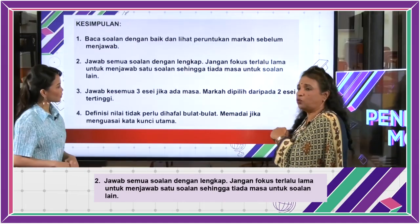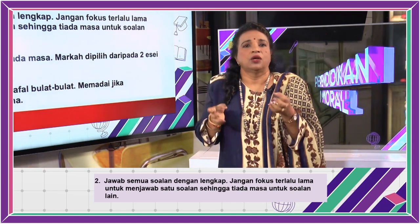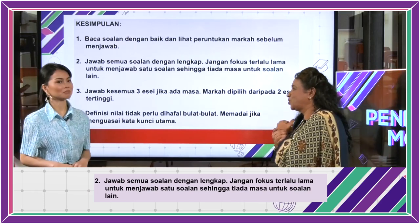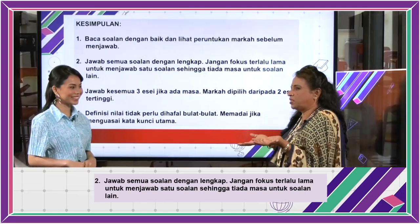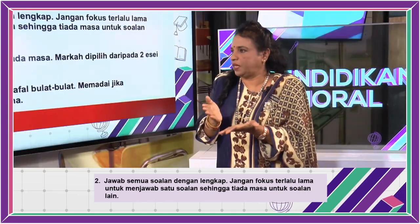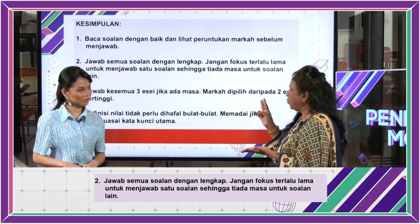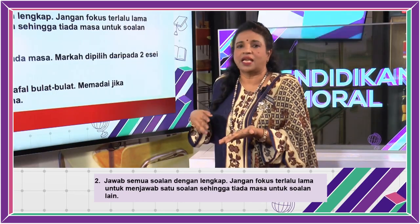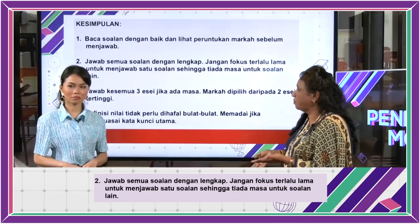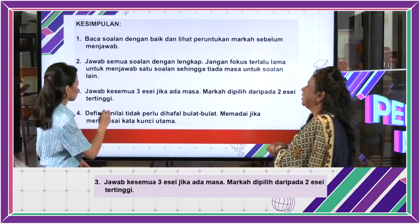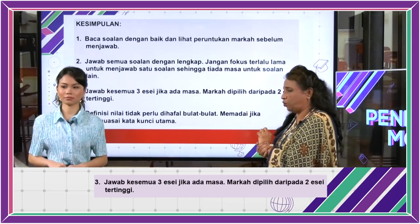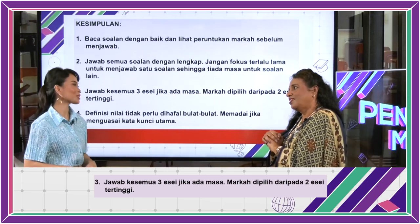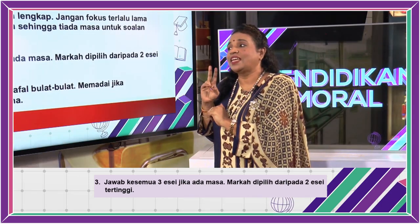Jangan fokus terlalu lama untuk menjawab satu soalan sehingga tiada masa untuk soalan lain — oleh kerana soalan struktur ada lapan. Kalau kamu fokus dekat dua soalan sahaja, masa dah habis — dua jam setengah dah habis. Lebih baik jawab semua soalan: lapan struktur dan dua esay. Bila ada lebihan masa setengah jam ke 40 minit, barulah murid menjawab bahagian tambahan. Saya galakkan pelajar beri jawapan tambahan untuk tiap-tiap soalan. Dan jawab kalau boleh tiga esay — dia hanya suruh jawab dua esay untuk dapat 20 markah, tapi tak salah kalau pelajar menjawab semua tiga esay untuk keselamatan. Diambil dua esay tertinggi markah.